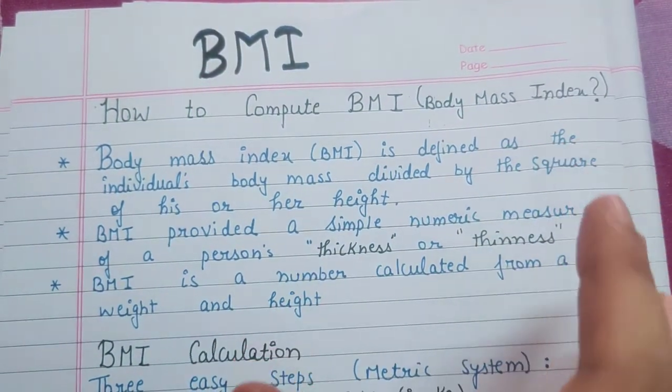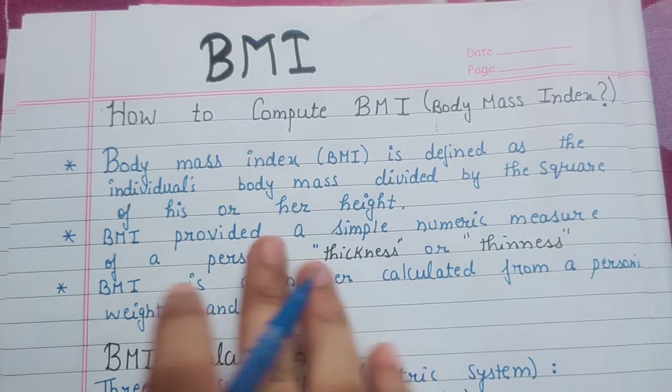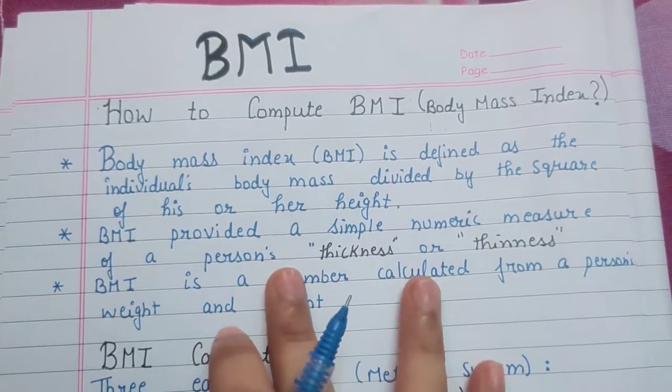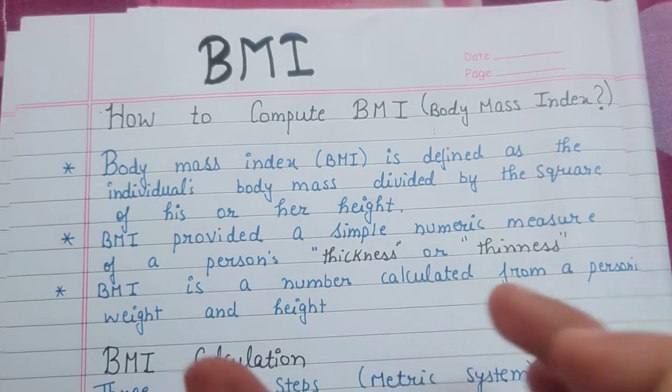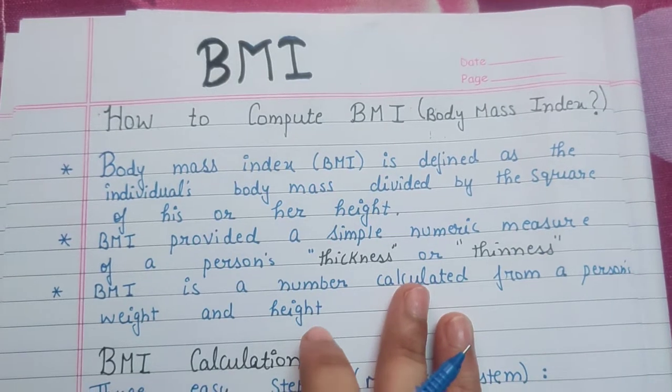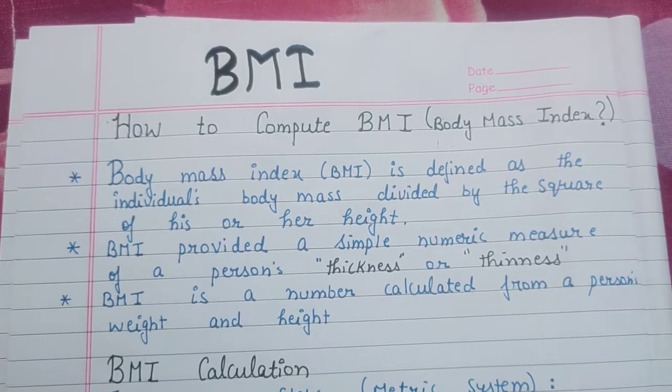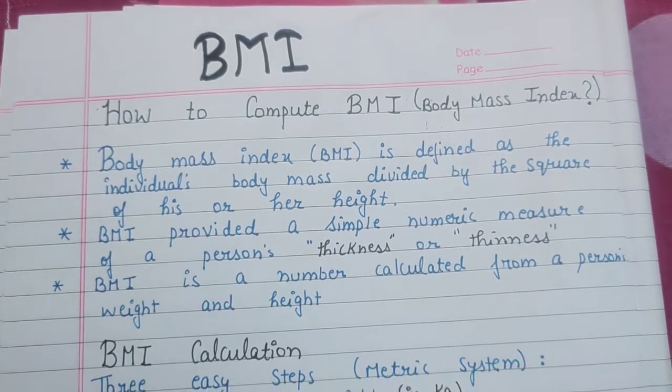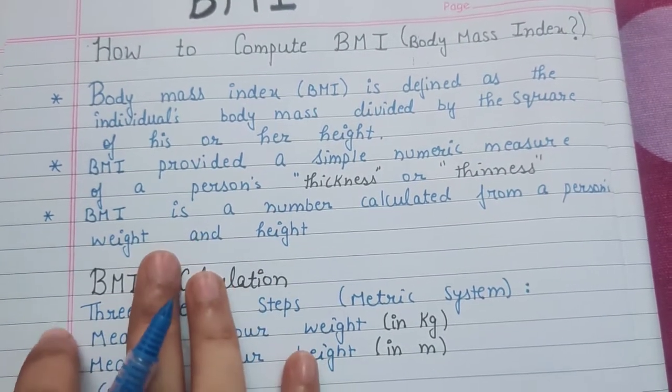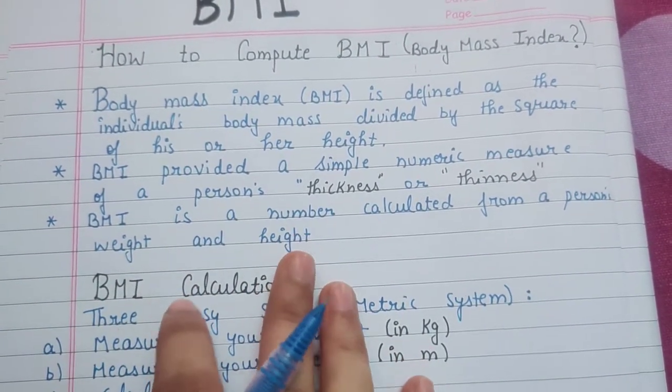BMI provides a simple numeric measure of a person's thickness and thinness - how fat or thin a person is. Body Mass Index is a number calculated from a person's weight and height. You only need to know the weight and height to calculate BMI for any person.